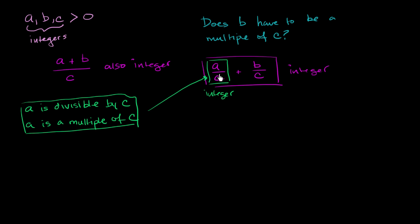Now, if I have an integer and I add something to it, and the whole thing is an integer, well, the thing that I'm adding to it must be an integer. The only way that I get an integer plus something to be an integer is if the thing I'm adding it to is also an integer. So there's no way that I could add an integer to a non-integer and then get an integer. So this has to be an integer, has to be an integer.